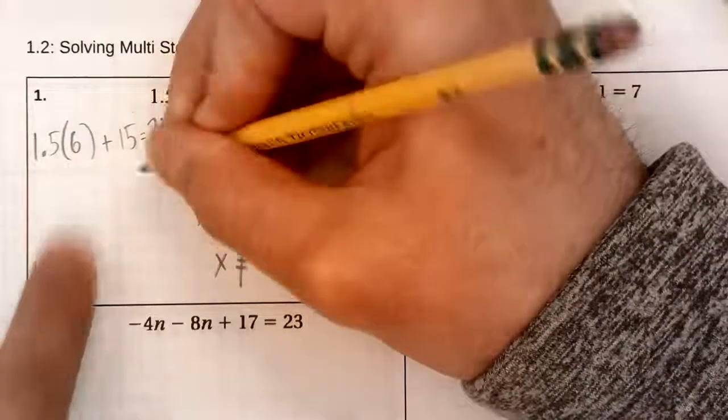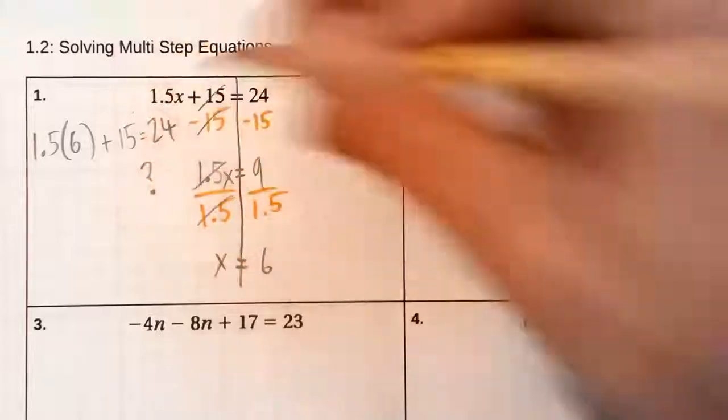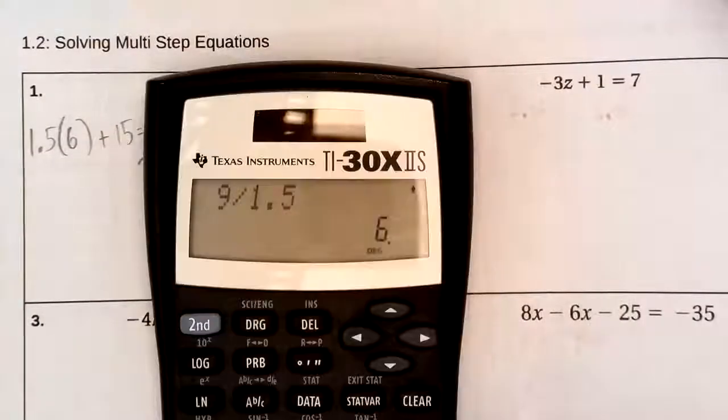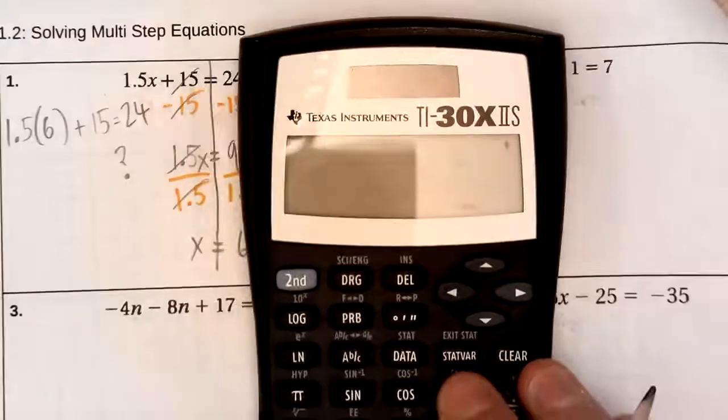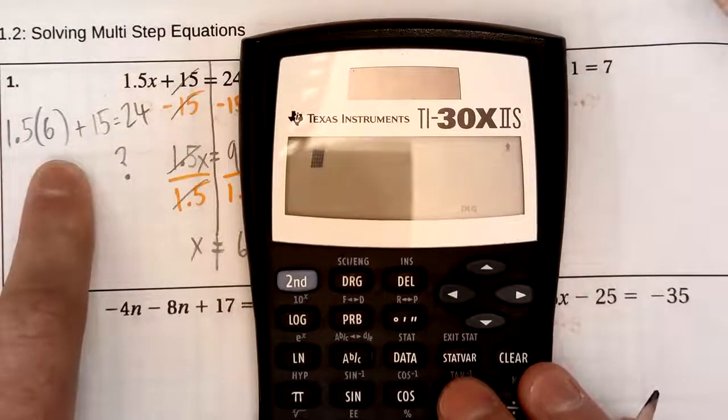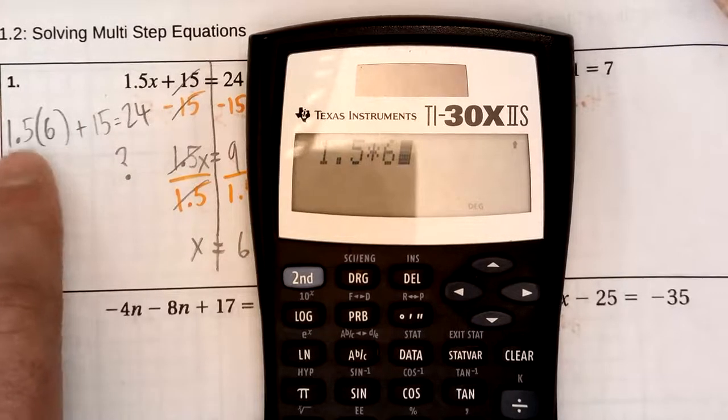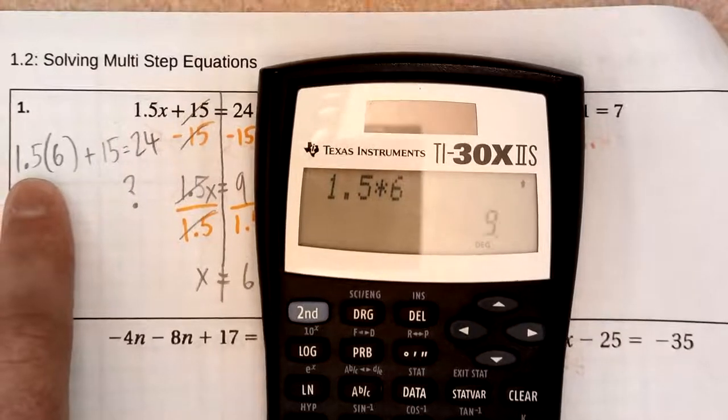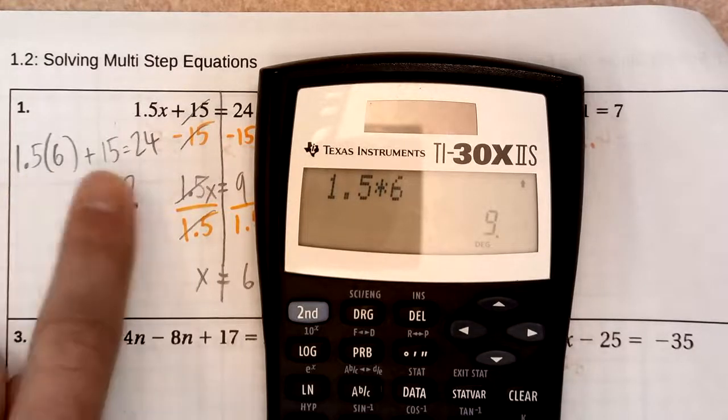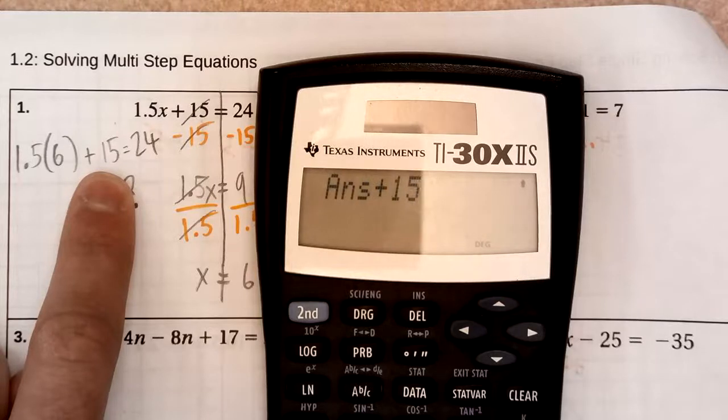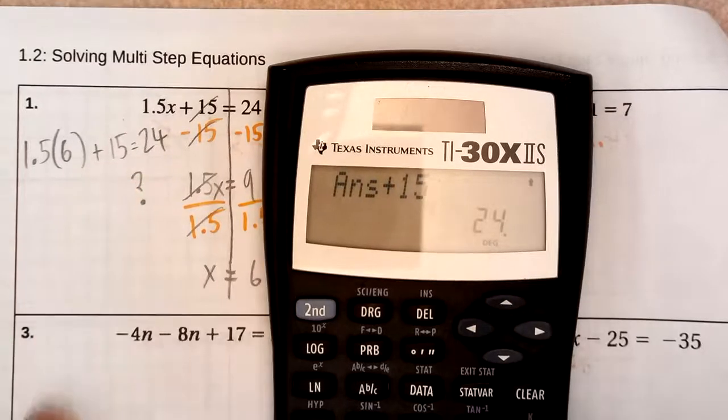And is that true? That's the question that I'm asking. Is that actually true? Does that work? So let's find out. I'm going to go to my calculator. And I think I can do this in one swoop of my calculator. 1.5 times 6. Let's see what that is. It's 9, plus 15, plus 15. And that is 24.